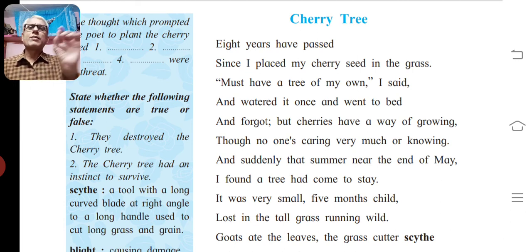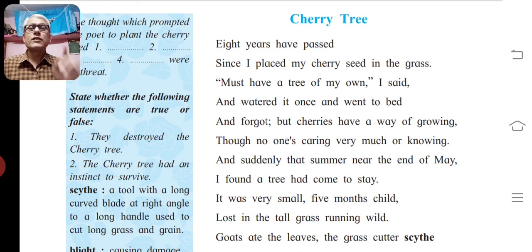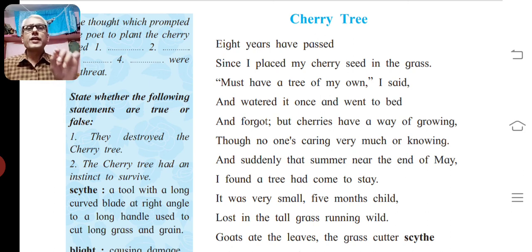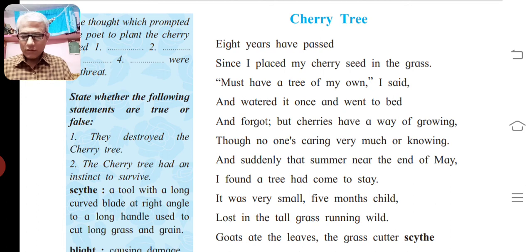Write the explanation as: 'Antithesis — two opposite words or ideas, small and tall, are used.' Now we have discussed the line 'Lost in the tall grass running wild' as personification.